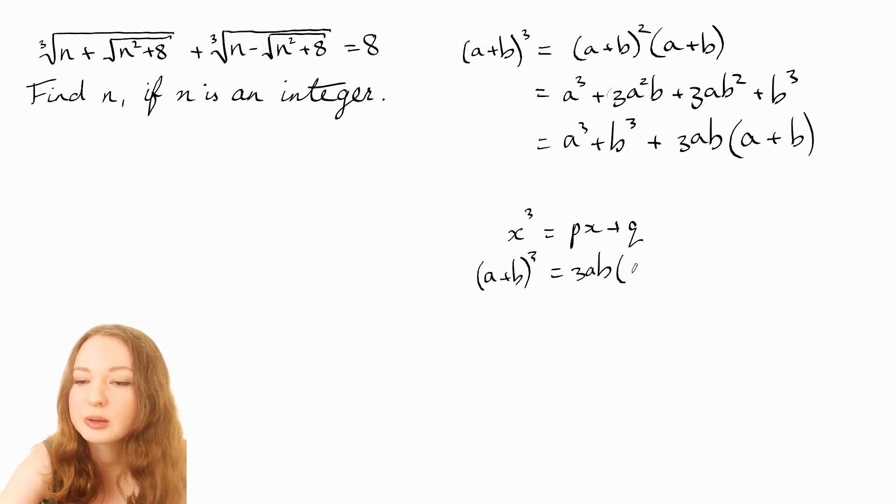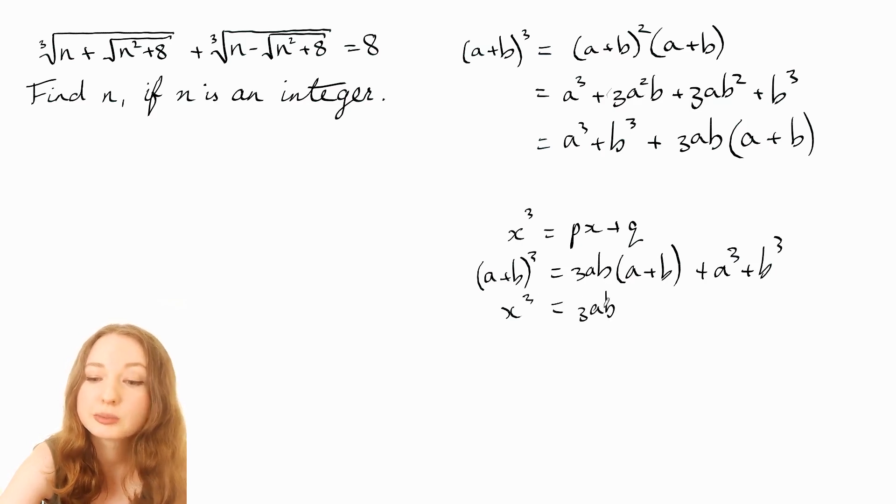so the 3ab times the (a+b) plus a³ + b³. And then this is just our x again, like that's x³. If we let x be a + b, so you've got that that is a p and that's our q.